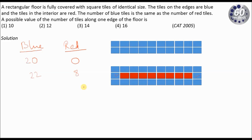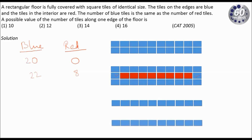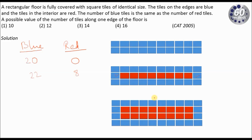Let me introduce one more layer of red tiles. I will get something like this — one layer here and one layer here. Compared to the previous case, the number of blue tiles will increase by 2, giving a total of 24. The number of red tiles will increase by 8 every time I add a layer, so it will become 16. If I introduce one more layer, blue tiles become 26 and red tiles become 24.